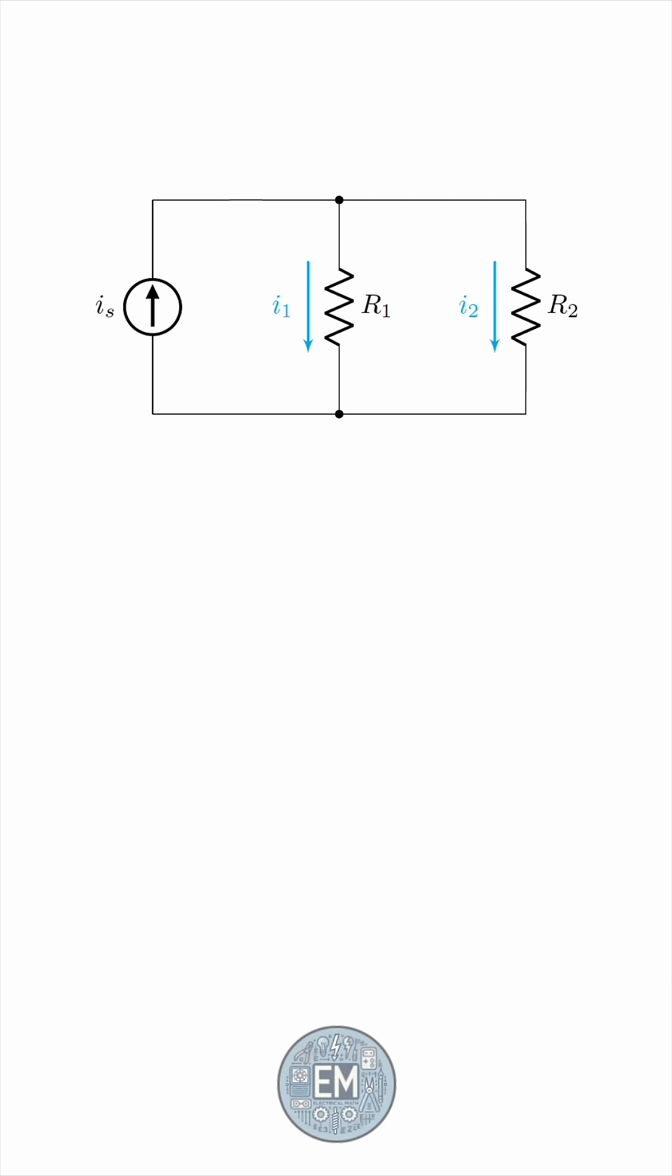From Kirchhoff's current law, we know that Is must be the sum of I1 and I2. But what is the share of the total current that each resistor will get?